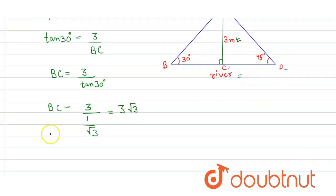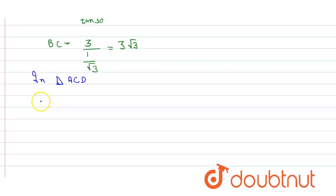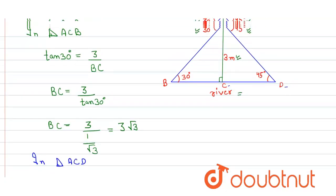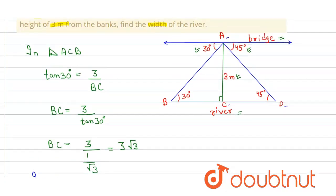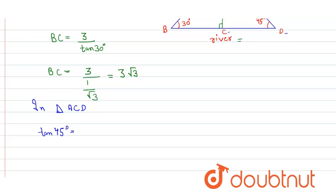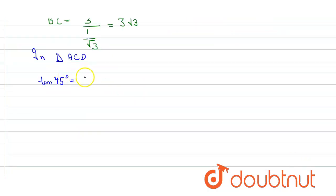In right angle triangle ACD, we take tan 45 degrees. So tan 45 degrees equals AC upon CD. The value of tan 45 is 1 and AC is 3 upon CD. From here we get CD equals 3 meter.